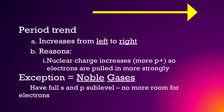The period trend for electronegativity is that it increases from left to right. The reason is the nuclear charge increases, so there are more protons. Similarly, the atomic radius decreases, so the electrons are pulled in more strongly. The exception is noble gases — they have full S and P orbital sublevels, so there is no room for more electrons.